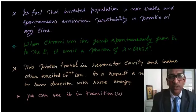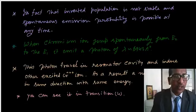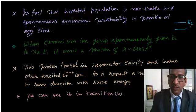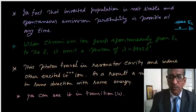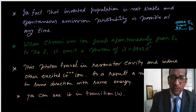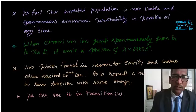In fact, the inverted population is not stable and spontaneous emission probability is possible at any time. When E2 has population inversion, probability increases for spontaneous emission. This photon is helpful to induce other atoms, and we get two photons, and this process continues.